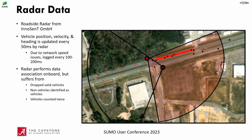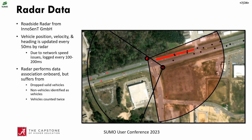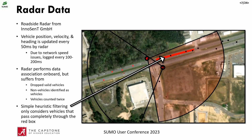The radar performs onboard data association and filtering, so we're working at a slightly higher level than typical radar processing. However, these radars do suffer from issues described in literature for roadside radars — they will frequently drop valid vehicles, there are non-vehicles identified as vehicles, and sometimes vehicles are counted twice. To deal with this, we implemented simple heuristic-based filtering, only considering trajectories that pass completely through that red box during our trajectory processing, though for volume calibration we consider more than just that box.